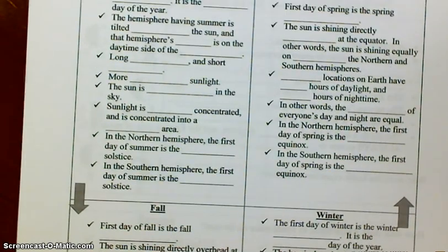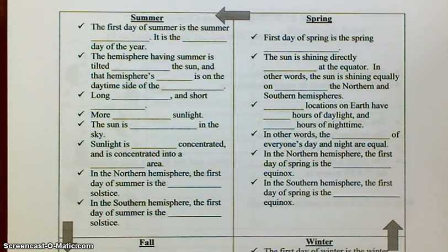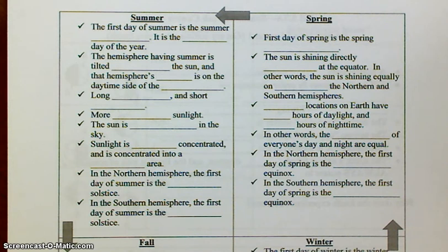After the season of winter comes spring. The first day of spring is the spring equinox. The sun is shining directly overhead at the equator — in other words, the sun is shining equally on both the northern and southern hemispheres. All locations on Earth have 12 hours of daylight and 12 hours of nighttime; the length of everyone's day and night are equal. In the northern hemisphere, the first day of spring is the March equinox. In the southern hemisphere, the first day of spring is the September equinox.